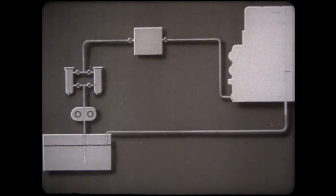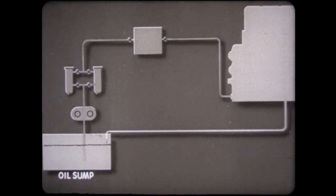From the crankcase, the oil is led to a sump tank, where solid impurities such as carbon, rust or metal particles are allowed to settle.